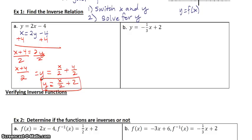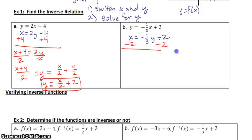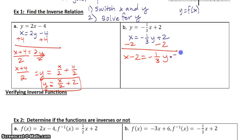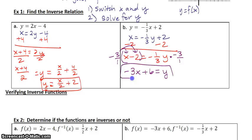Go ahead and pause and try part B. For part B, to get rid of the negative one-third, multiply by the reciprocal — and remember, you have to do it to both pieces. So you end up with negative 3x plus 6 for your inverse this time.